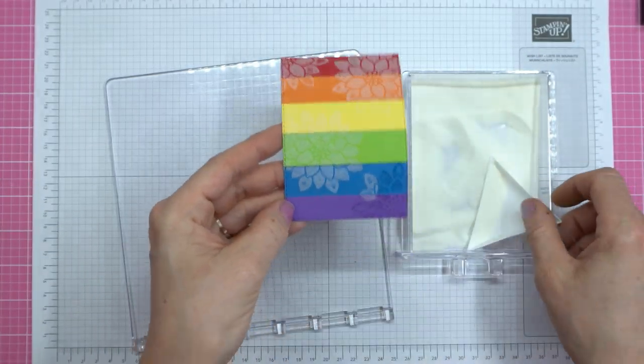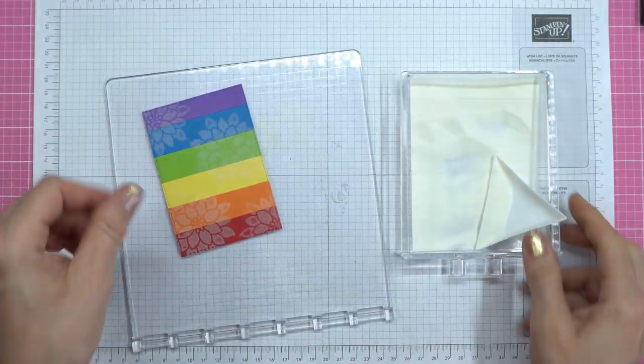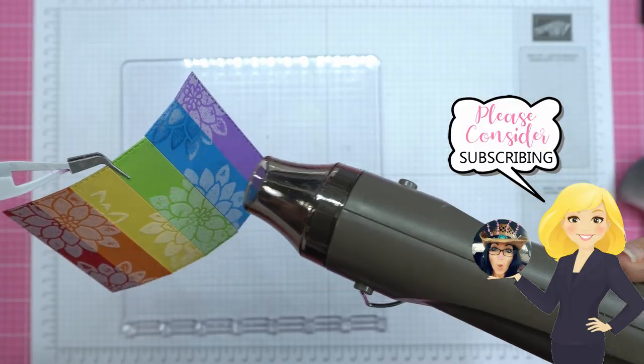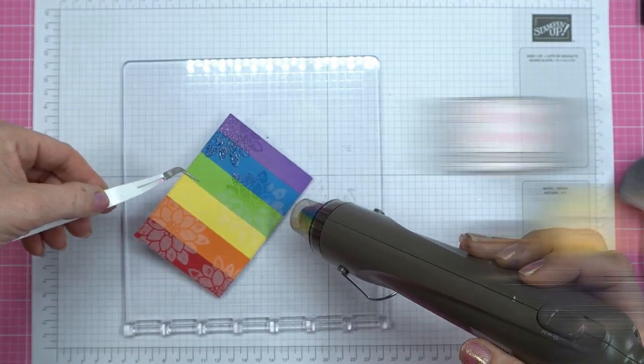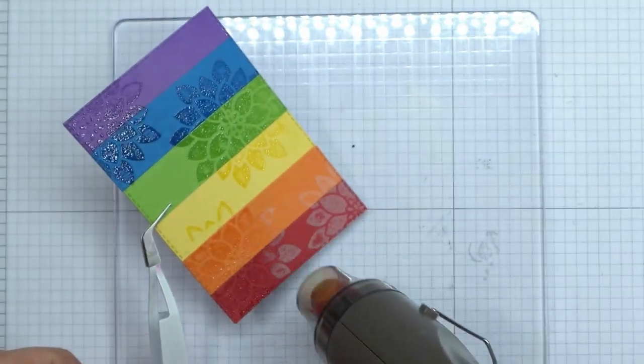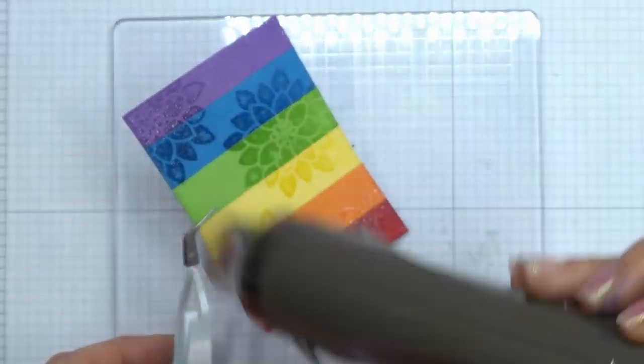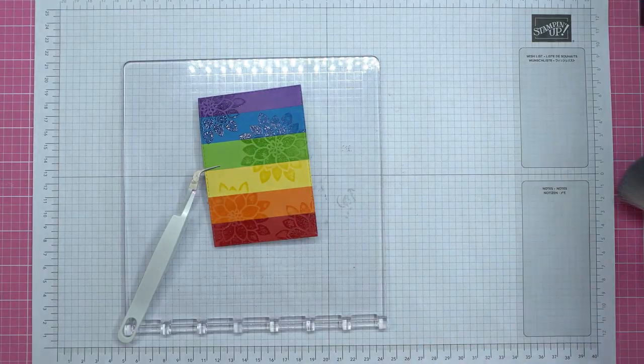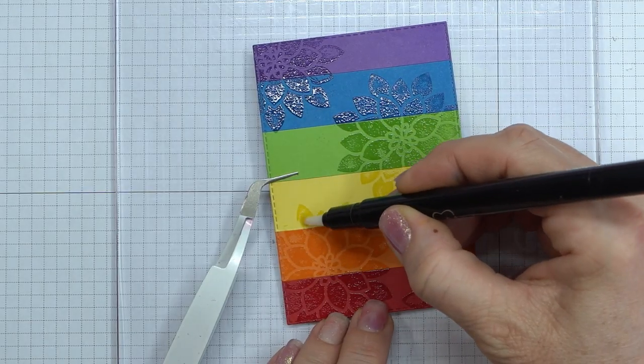But I used my Versamark sticky ink pad just to get a watermark all over there. And then I'm going to use some clear embossing powder. Now I had already filmed this and I'm going super, super quick and I rushed and I didn't get a good impression. I need to re-ink my Versamark and I didn't get a good impression. And I was like, oh, that's okay. It doesn't bother me. And then I thought, you know what, I'm going to use this opportunity to show you guys what you can do if this happens to you.